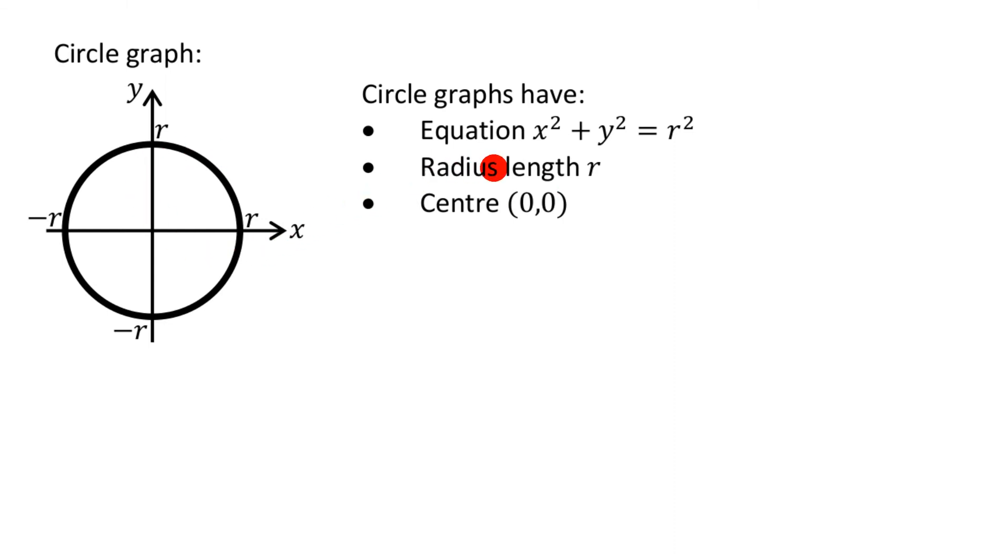So all the circle graphs, for GCSE anyway, will have center 0, 0. So they're trying to keep it simple. You can make circles that don't have a center at 0, 0, but that's a slightly differently looking graph, and it doesn't come up in the exam. They keep it very simple in the GCSEs.